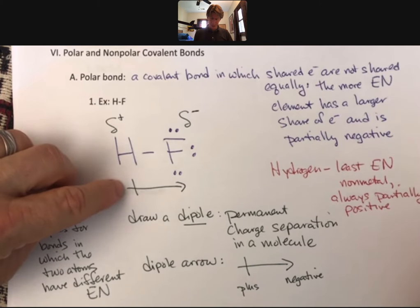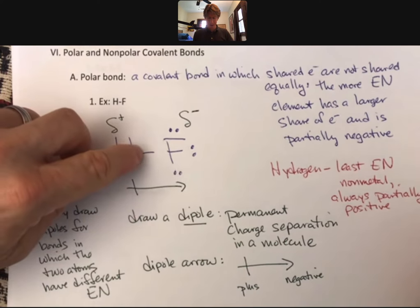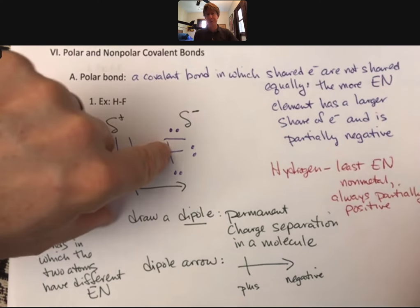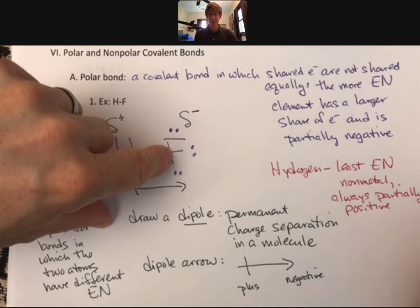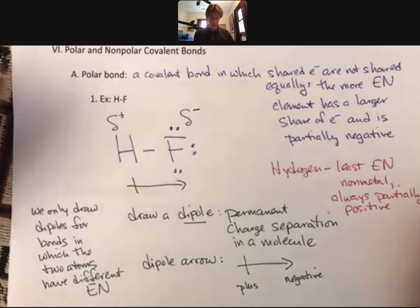So typically I draw with a dipole arrow. That means that this hydrogen is plus, and the electrons are spending more time with the fluorine. That's why the arrow is pointing towards the fluorine. And only for bonds.